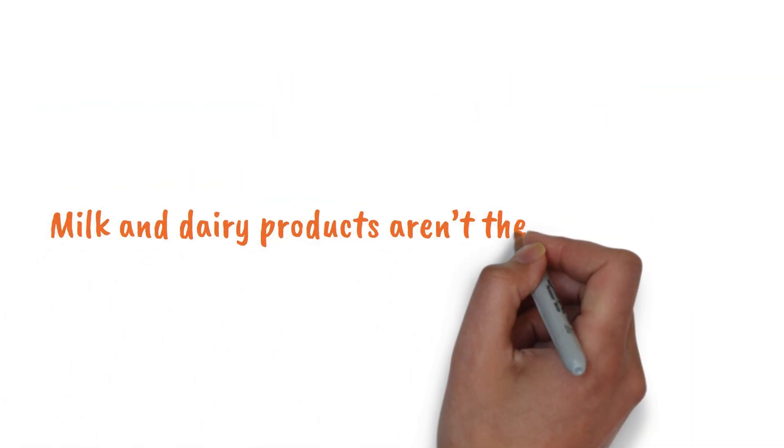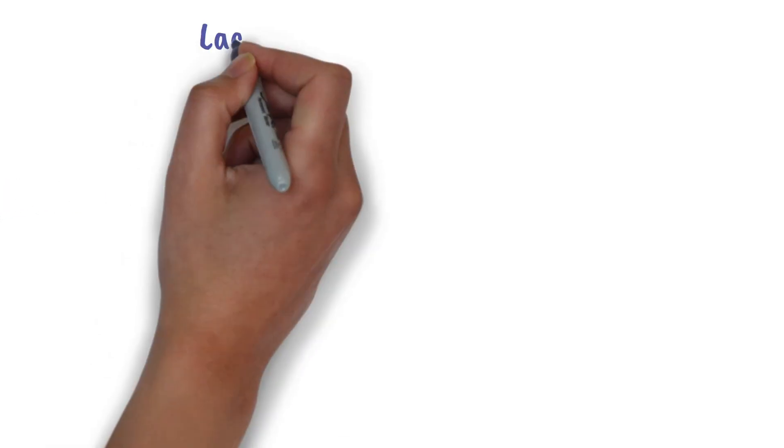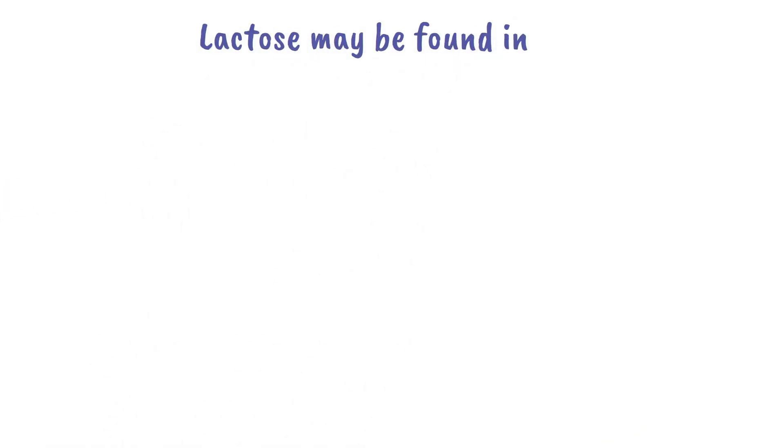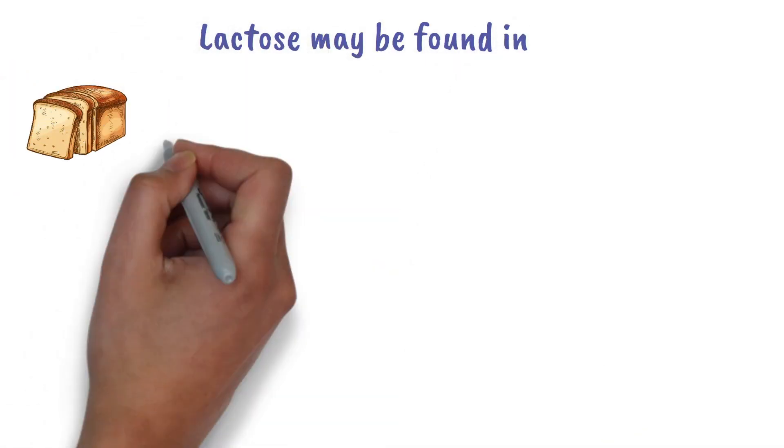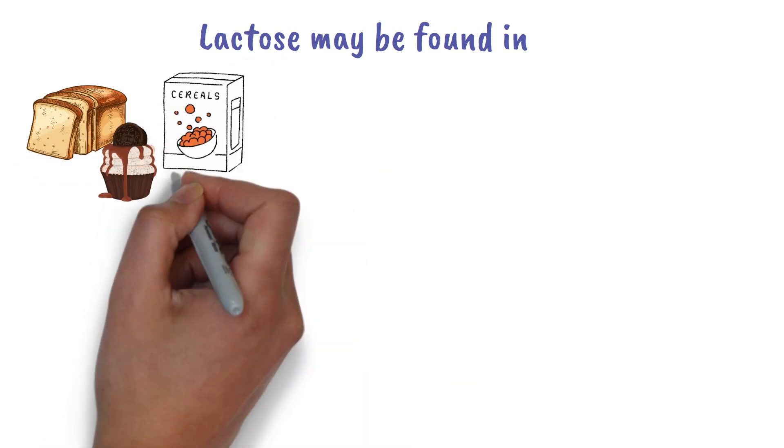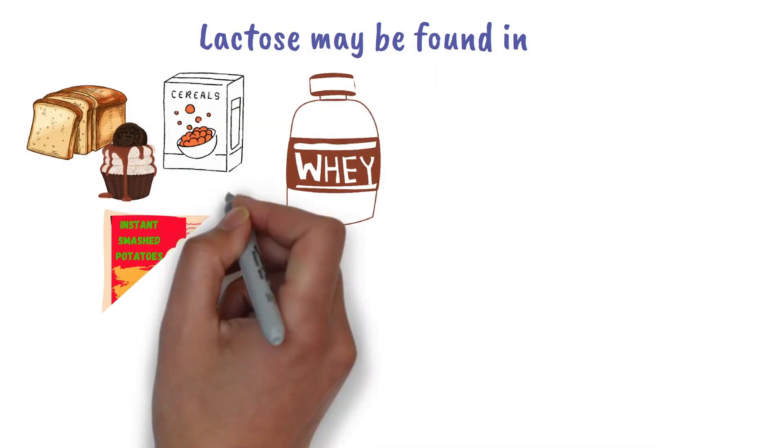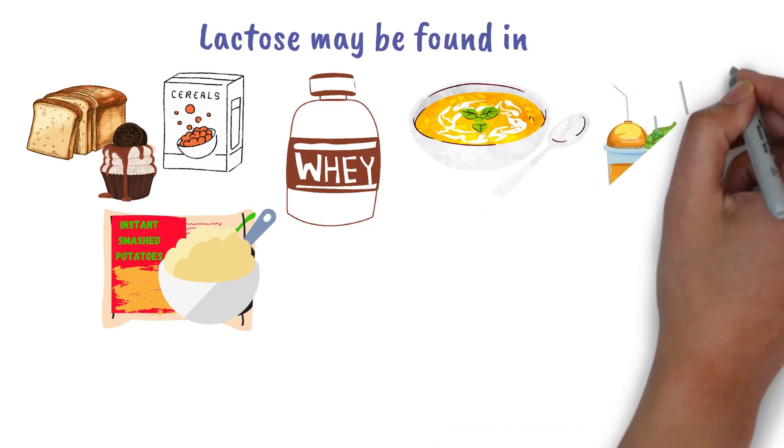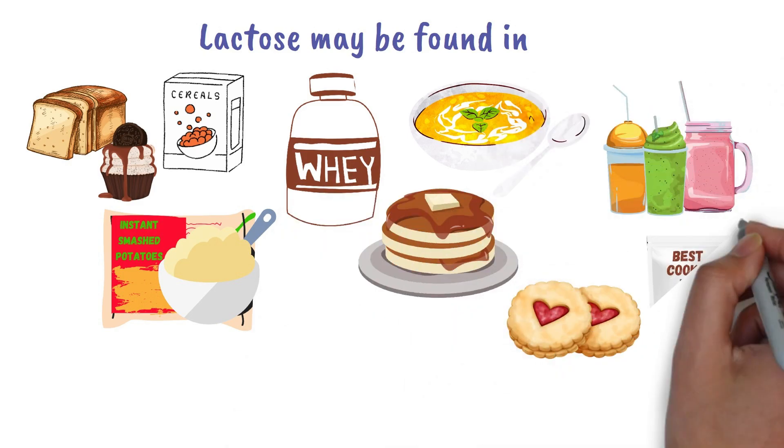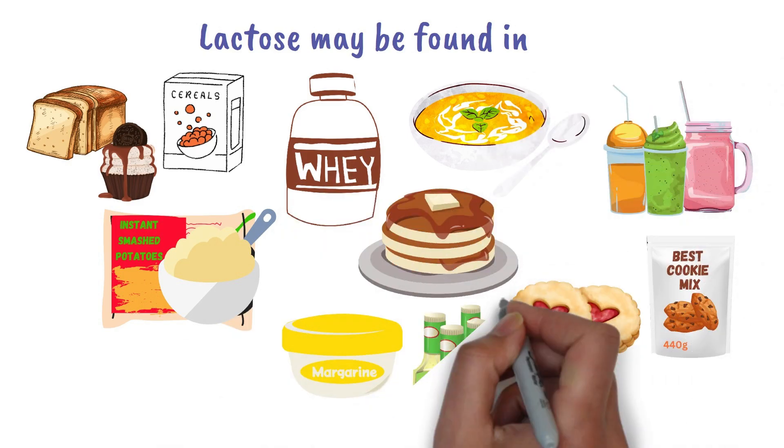Milk and dairy products aren't the only offenders. Lactose may be found in foods you don't expect, including calcium-fortified breads, cereal and baked goods, powdered meal replacements, instant potatoes, soups, and breakfast drinks, pancake, biscuit, and cookie mixes, margarine, salad dressings, and products labeled non-dairy, like whipped toppings and creamers, which may include milk-derived ingredients.